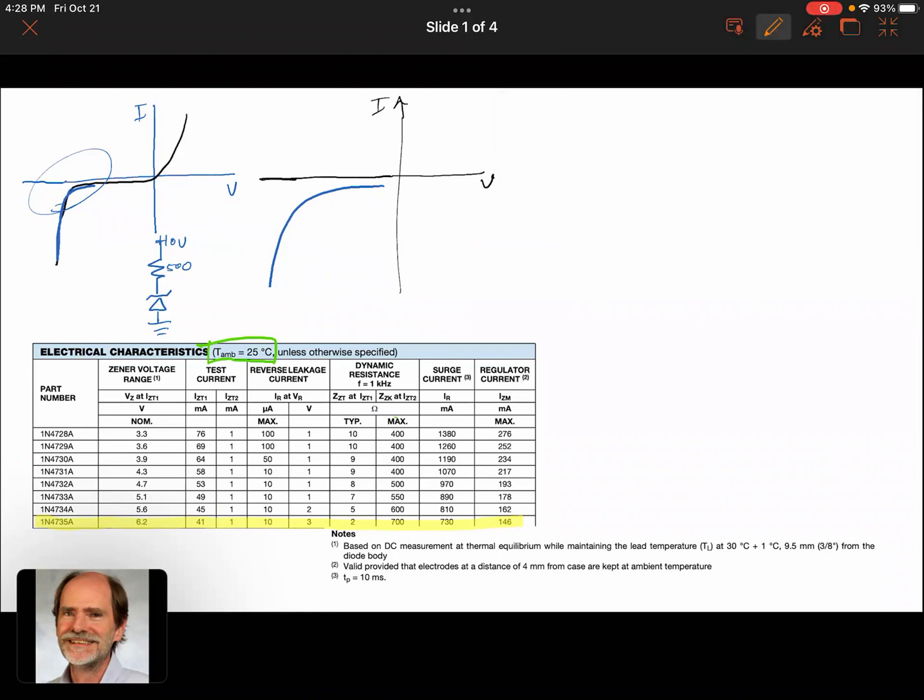So what do these numbers mean? First, we could understand that we've got some data points, a couple different data points where we're measuring it, and there's a best fit line. We have a test current, so this vertical scale is current. We've got a test current Izt—I think that's Izt1 here.